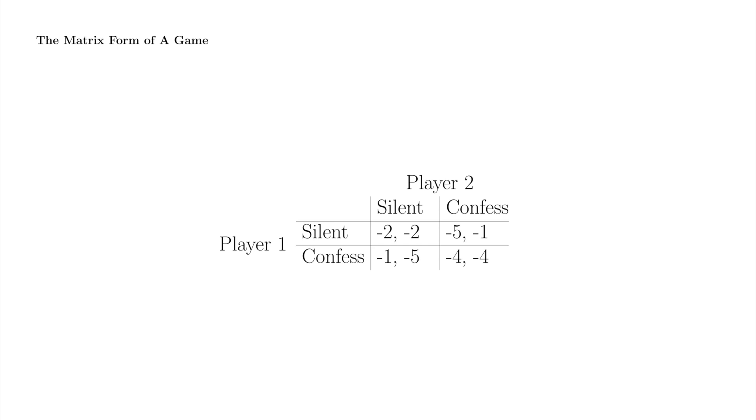A game, we said, needs players and rules. Game theorists divide the rules into two components. A set of strategies for each player and a payoff function for each player mapping the selected strategies of all players to a payoff. Win, lose, or draw in rock, paper, scissors. Number of years in jail in prisoner's dilemma. Let us identify all of these components. Players, strategies, and payoff functions.